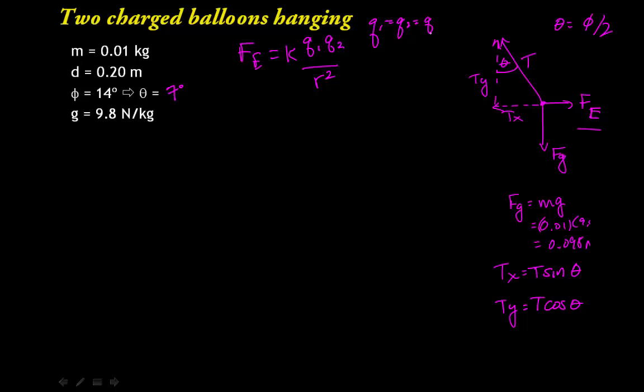Now we have a free body diagram. We can write a couple of Newton's second law equations. So in the x direction, sum of the forces in the x equal, we have our electrical force minus the x-part of the tension force. That equals m times a in the x direction. And in the y, we have the y-part of the tension force minus the gravity force equals m times a in the y direction. Now our balloons are suspended here, so we know that they have no acceleration. So we can set those both to zero.